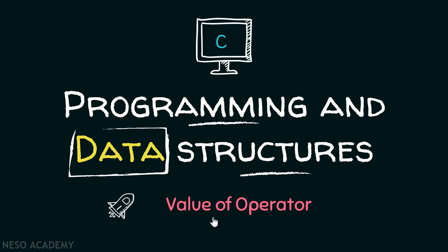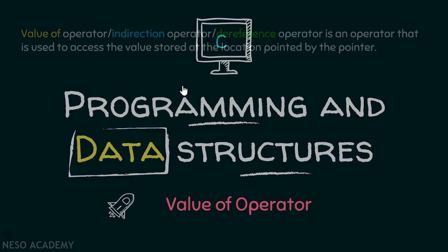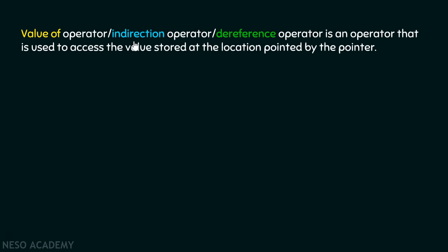In this presentation, we will learn a new operator called the value of operator, which is very useful for understanding the concepts of pointers. The value of operator — also called the indirection operator or dereference operator — is used to access the value stored at the location pointed by the pointer. Let me show how this operator works.